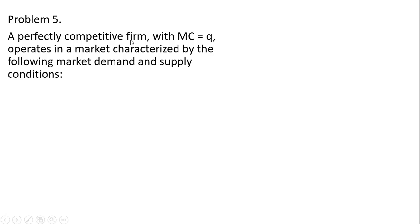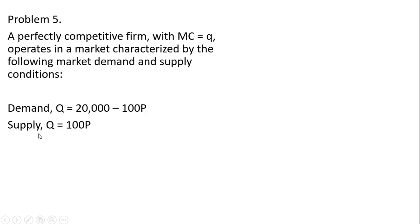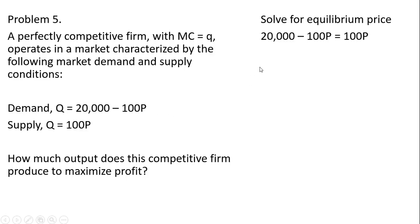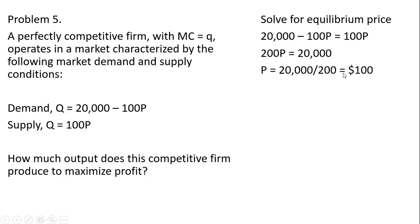Problem five. A perfectly competitive firm with marginal cost equals q operates in a market with given market demand and supply conditions. We first find the equilibrium price by setting quantity demanded equal to quantity supplied. Adding 100p to both sides gives 200p, and dividing through by 200 gives an equilibrium price of $100. The competitive firm then produces where price equals marginal cost: 100 equals Q, so the firm produces 100 units of output.